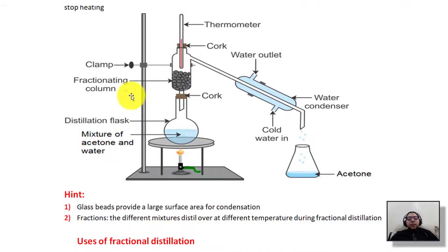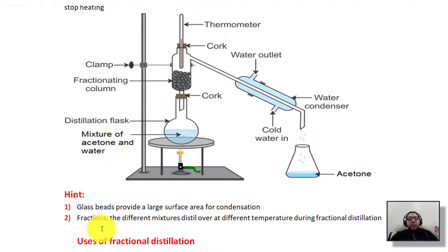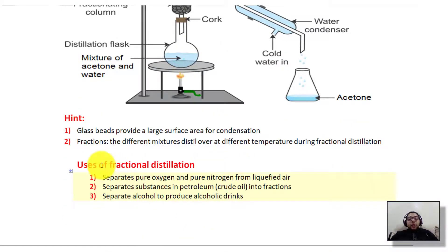Key points to remember: the glass beads provide a large surface area for condensation because they are very small — as particles get smaller, surface area increases. Also, the different fractions of the mixture distill over at different temperatures during fractional distillation.